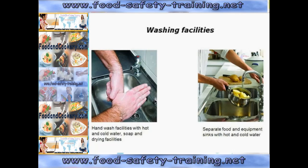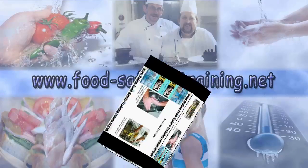Ideally in a food premises you should have three types of washing facilities: hand wash facilities, food wash facilities, and equipment wash facilities. You must by law have hand wash facilities. As for food and equipment wash facilities, you can combine the two operations, but if you do, you must separate the operations with a disinfectant.